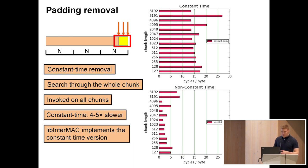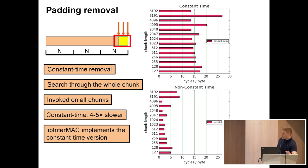One source of non-uniform response times can come from padding removal. When you decrypt the last chunk and inspect the encoding byte, if it tells you there's padding, you have to remove it. The most optimal way is to start from the end and backtrack until you find a byte that is different — but this takes time proportional to the amount of padding, which kind of reveals the ciphertext boundaries.